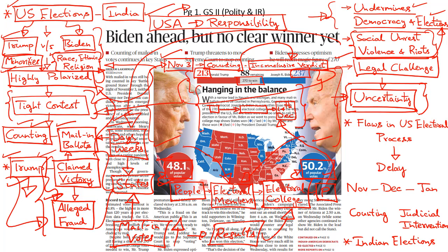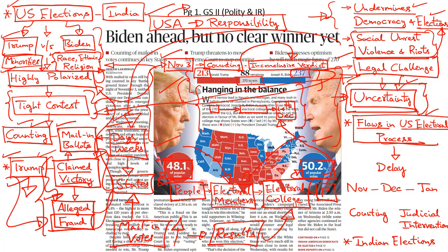According to Trump, there has been a serious fraud committed in the postal ballot system. While he has not presented any evidence to substantiate his claims, his threat to open a legal challenge and take the matter to the Supreme Court will definitely lead to political uncertainty that might prolong for a few days or weeks and could result in the emergence of a legal and constitutional crisis.